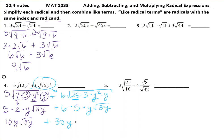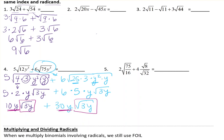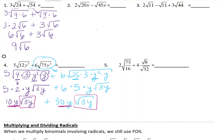If you look at these two, this one is 10y outside and 3y inside, this one is 30y with 3y inside, so these are like terms. I can add these two just like they're like terms. I have 10 plus 30, which gives me 40y√(3y).